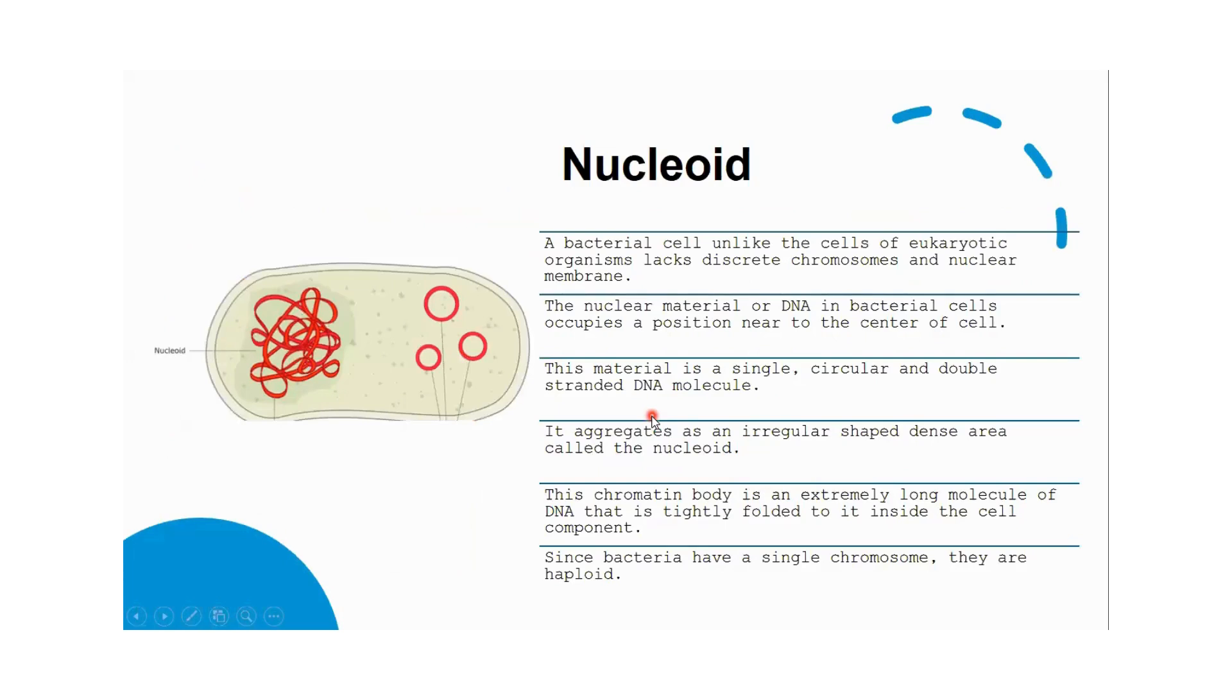The nucleoid is basically the DNA of bacteria. A bacterial cell, unlike eukaryotic organisms, lacks discrete chromosomes and a nuclear membrane. The nuclear material or DNA in bacterial cells occupies a position near the center of the cell.